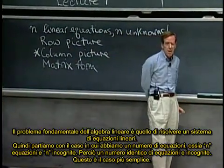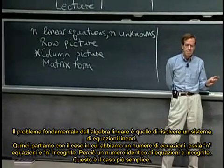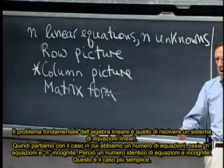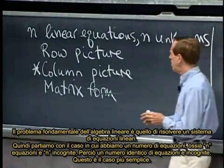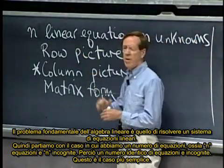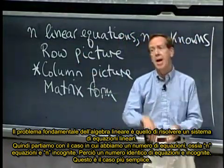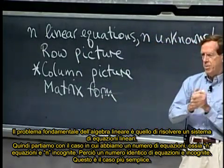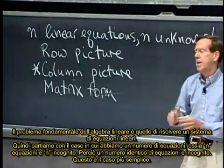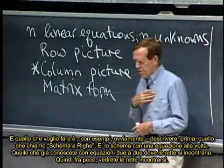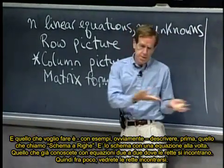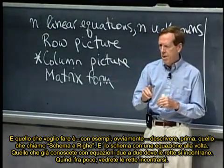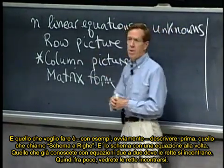The fundamental problem of linear algebra, which is to solve a system of linear equations. So let's start with the case when we have some number of equations, say n equations and n unknowns. So an equal number of equations and unknowns. That's the normal nice case. And what I want to do is, with examples of course, to describe first what I call the row picture.